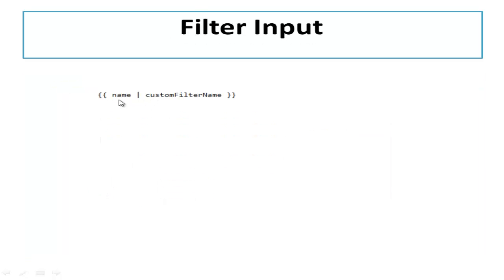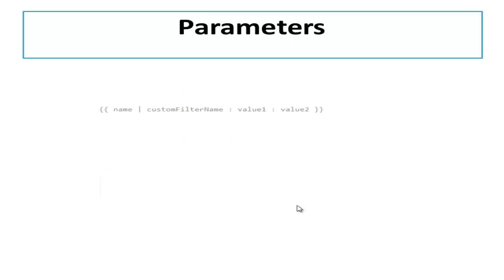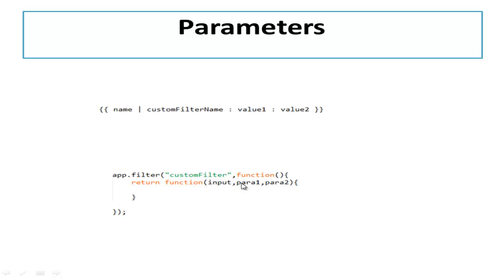Suppose you have a name scope on which you want to apply your custom filter. The first parameter of your custom filter — input — will actually denote the value of name which you want to format. The next parameter is optional and depends on whether your filter takes any arguments. If you want to pass parameters to your custom filter, you use colon sign and the name of the parameter. Here, custom filter name is the name of the filter, and value1 and value2 are the parameters you want to pass.